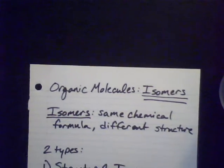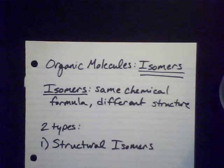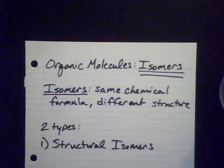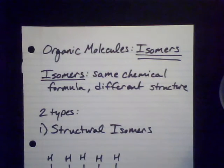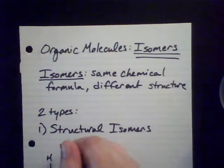There are basically two types I want to talk about. The first are structural isomers. Structural isomers have the same chemical formula, but a different bonding pattern. So you have to physically take them apart and rearrange them, but you can use the same component pieces — you just end up with different bonding patterns.